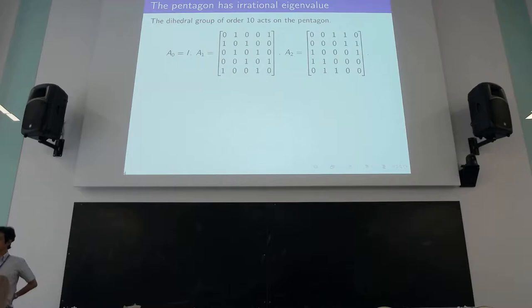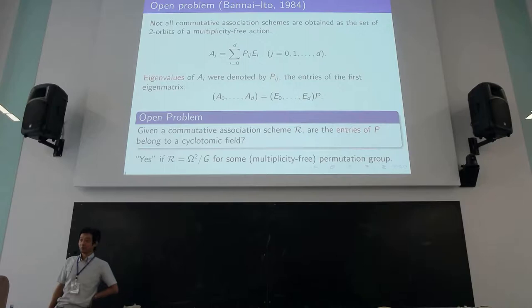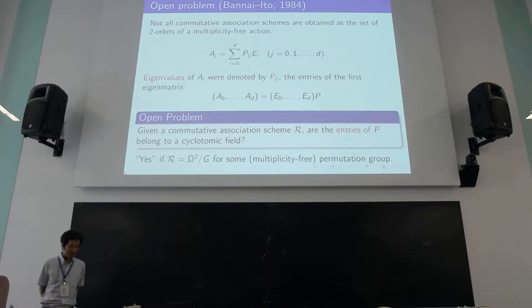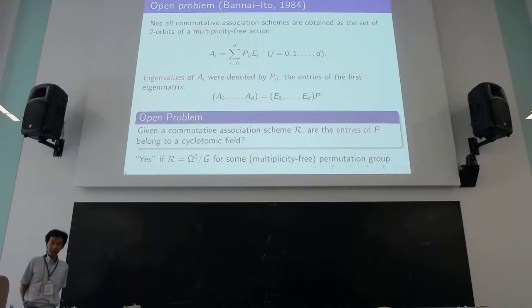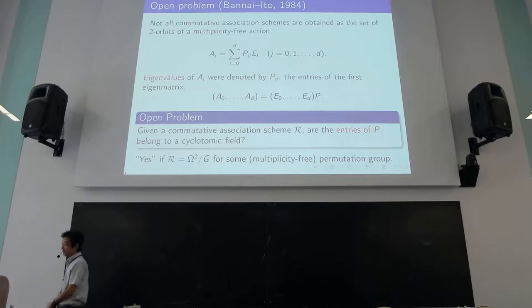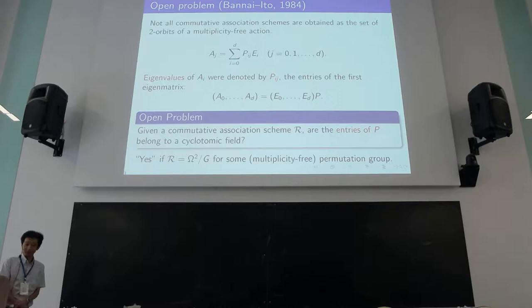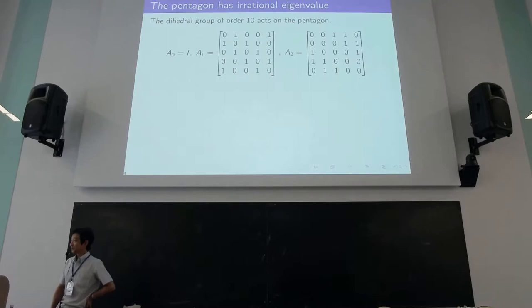What causes the problem? We have seen in many cases — for example, in the exercise session — the first exercise was to compute the eigenvalues of the Johnson graph. The eigenvalues of the Johnson graph are integers, and most strongly regular graphs satisfy this. If the eigenvalues are integers, there is no problem — they belong to the rationals, so certainly they belong to the cyclotomic field. We need to look at examples where eigenvalues are not rational. The smallest one is the pentagon.